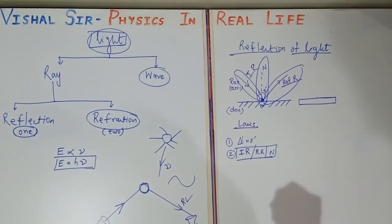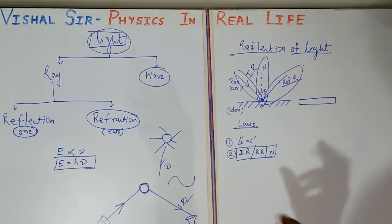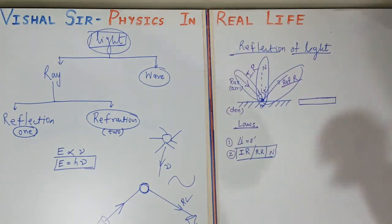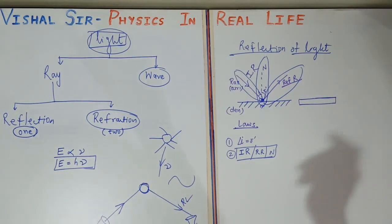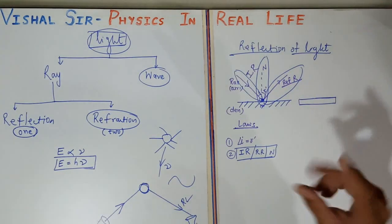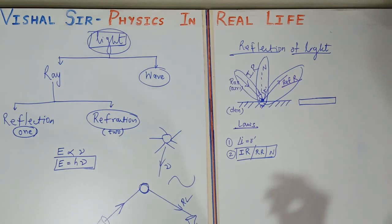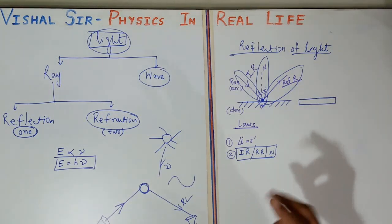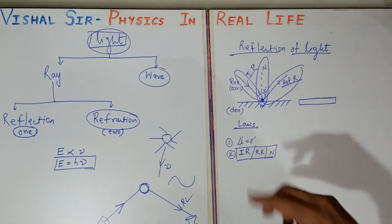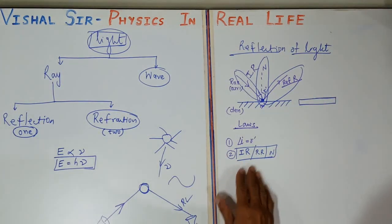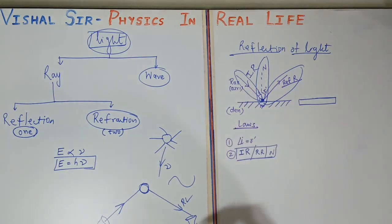Now let us understand how questions appear in exams. For one mark: 'What is reflection of light?' — give the definition. For two marks: 'What are the laws of reflection of light?' — write both laws. For three marks: 'Explain with the help of a ray diagram' — you will need to draw the diagram as well.